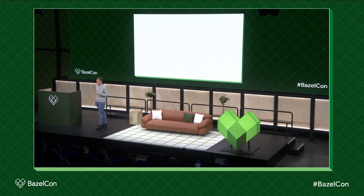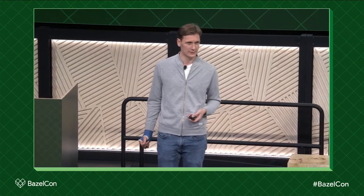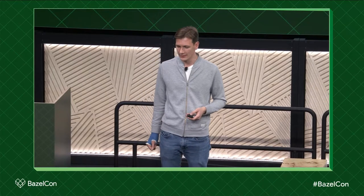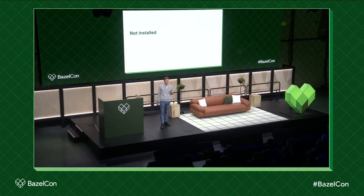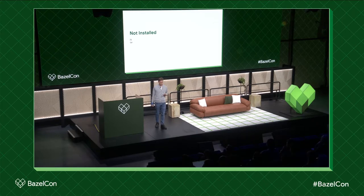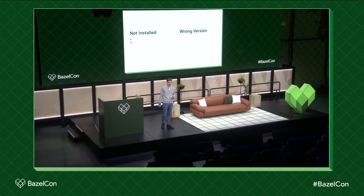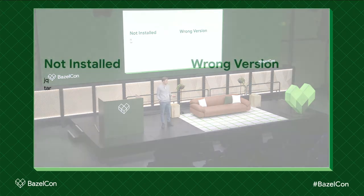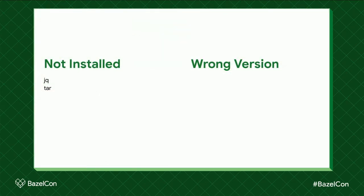So what could go wrong? The tool cannot be installed — jq is not a standard tool, it doesn't come with your standard installation, you have to tell the operating system to make it available. What about tar? On Unix systems you can expect tar to be there, but maybe you have a project that's also supposed to build on Windows and you're expecting msys to be installed to make tar available, and it's not. Another problem could be that these tools have the wrong version — jq is somewhat recent compared to tar, and features change over time.